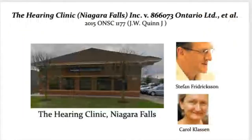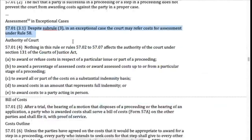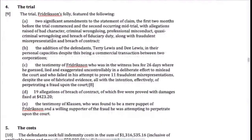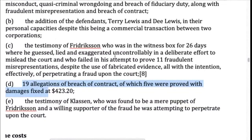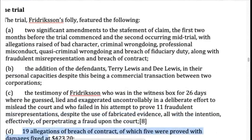So we're going to go through this based on our four goals. First, the question of indemnification — the successful parties are supposed to be indemnified for legal fees paid. Who are the successful parties? At paragraph 9(d), it's pretty clear that the plaintiffs won. Stefan Fredrickson and the hearing clinic won because they sued for 19 allegations of breach of contract and five were proved. So the defendant breached their contract five times and has to pay the plaintiff damages. They sued, they won — yes, they got less than they claimed in their statement of claim, but so does everyone; almost every plaintiff who succeeds gets a smaller amount than what they claimed.